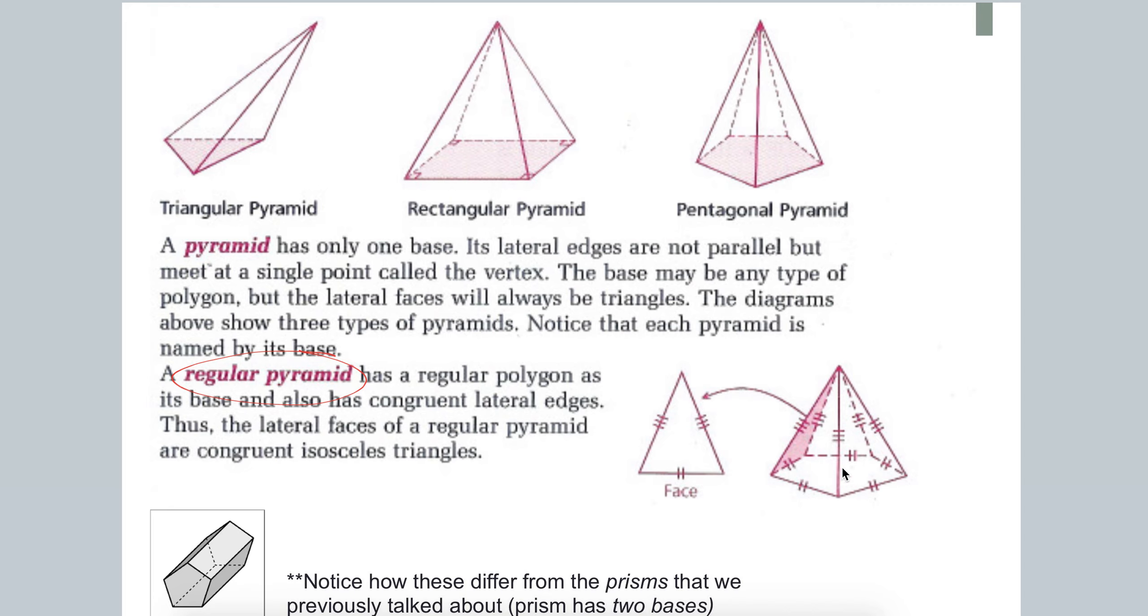It comes to a point because it's a pyramid, and it's regular because all five sides of the pentagonal base are congruent.